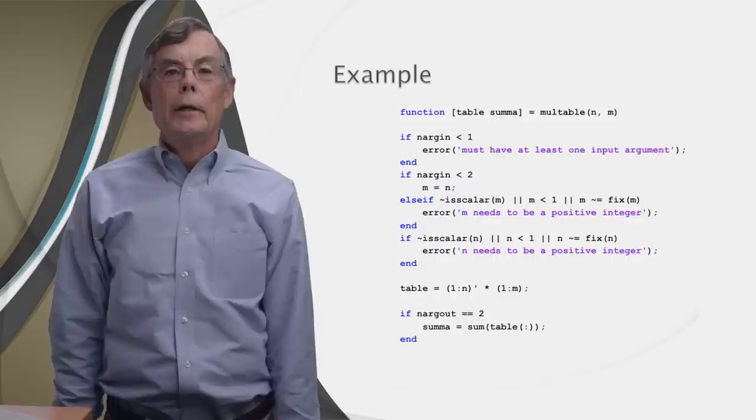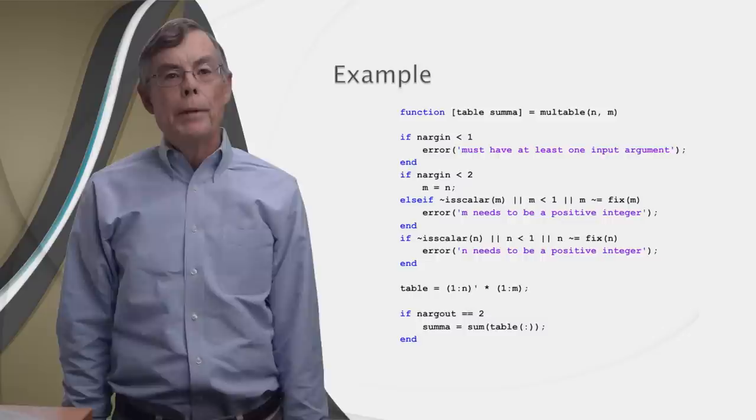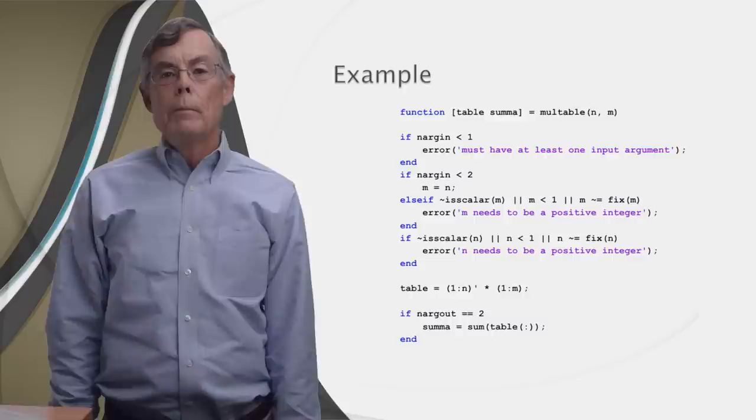Now we repeat the same check for n that we did for m. At last, we can compute the multiplication table. It's funny how the error checking was more painful than the actual computation. That's not that unusual. But it's worth the pain now to avoid pain later, when assumptions are violated during actual function calls.